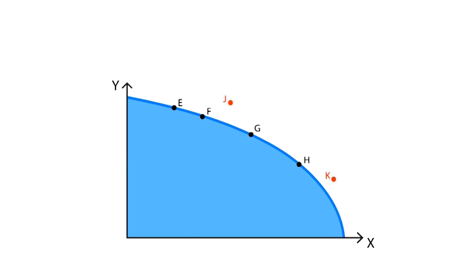Finally, points outside the production possibility frontier such as J and K correspond to unattainable production levels, given the technology.